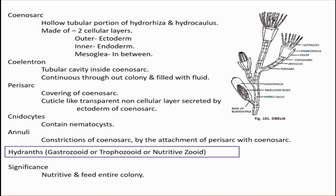Now we are going to learn more about the zooids — two types: gastrozoid and blastostyle. The gastrozoid is otherwise called hydranth, and also trophozoid, which means nutritive zooid because it gives nourishment to the entire colony. In this picture there are multiple gastrozoids visible and only one blastostyle present in the Obelia colony.